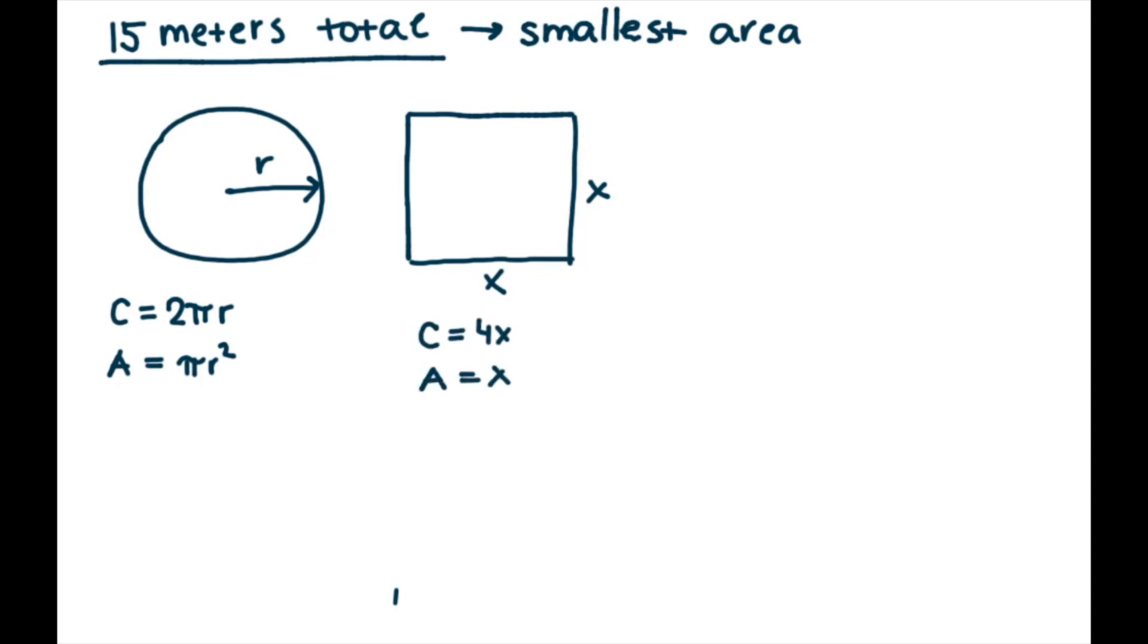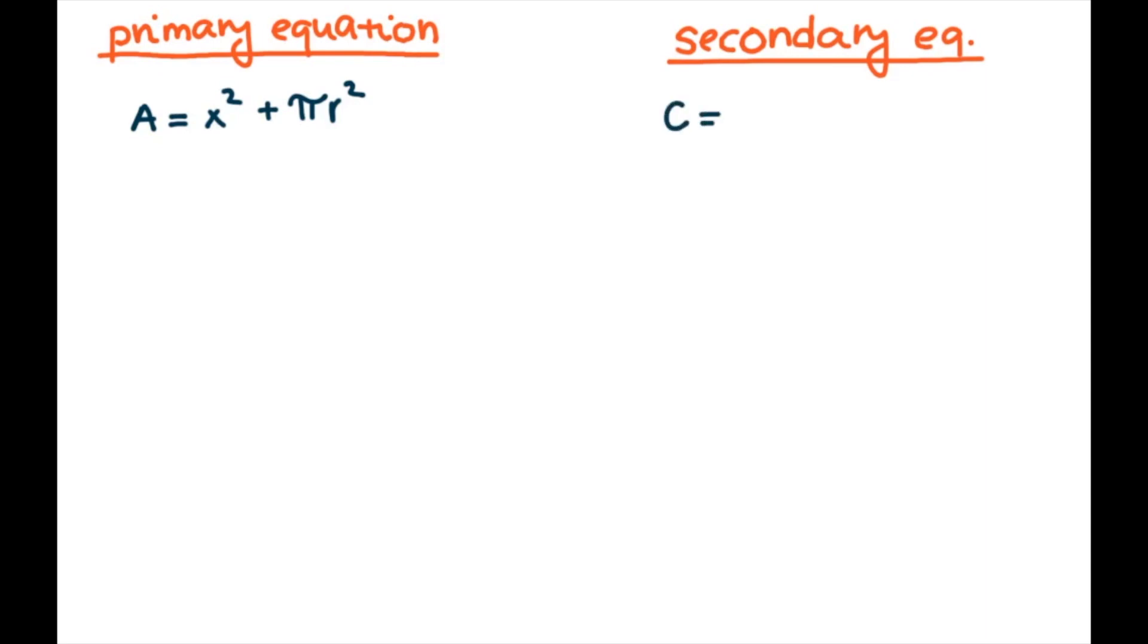So here we set up our primary equation, which will represent our area. So if we add together both circle and our square, we will get this equation x² plus πr². So we set up our secondary equation because we have two unknowns. So secondary equation represents the circumference of both shapes together. And we know that we have 15 meters of mesh in total. So we say that all this together equals 15.